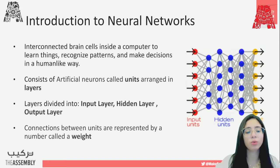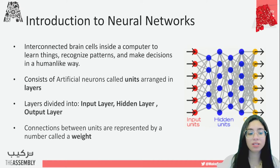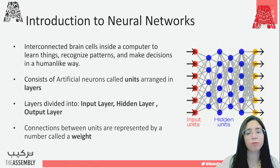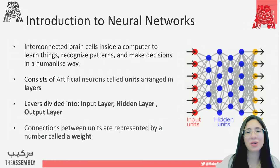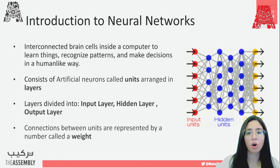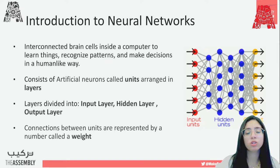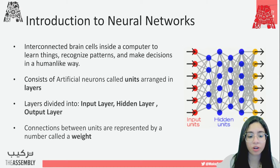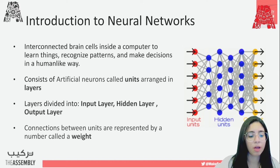Neural networks can be thought of as interconnected brain cells inside a computer, used for learning things, recognizing patterns, and making decisions like the human brain. They're not as accurate as the human brain, but they're reaching really good accuracy. Neural networks consist of artificial neurons called units, arranged in layers as shown in the figure.